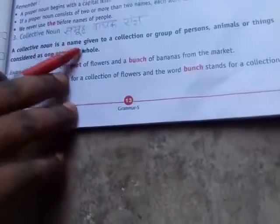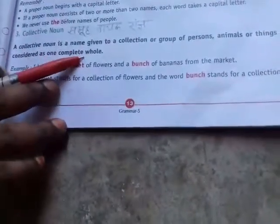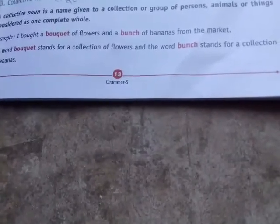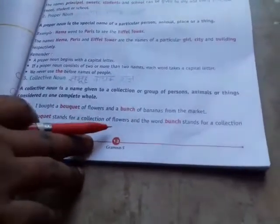Third, collective noun — Samuh Vachak Sangya. A collective noun is a name given to a collection or group of persons, animals or things considered as one complete whole. For example: I bought a bouquet of flowers and a bunch of bananas from the market. The word 'bouquet' stands for a collection of flowers and the word 'bunch' stands for a collection of bananas.